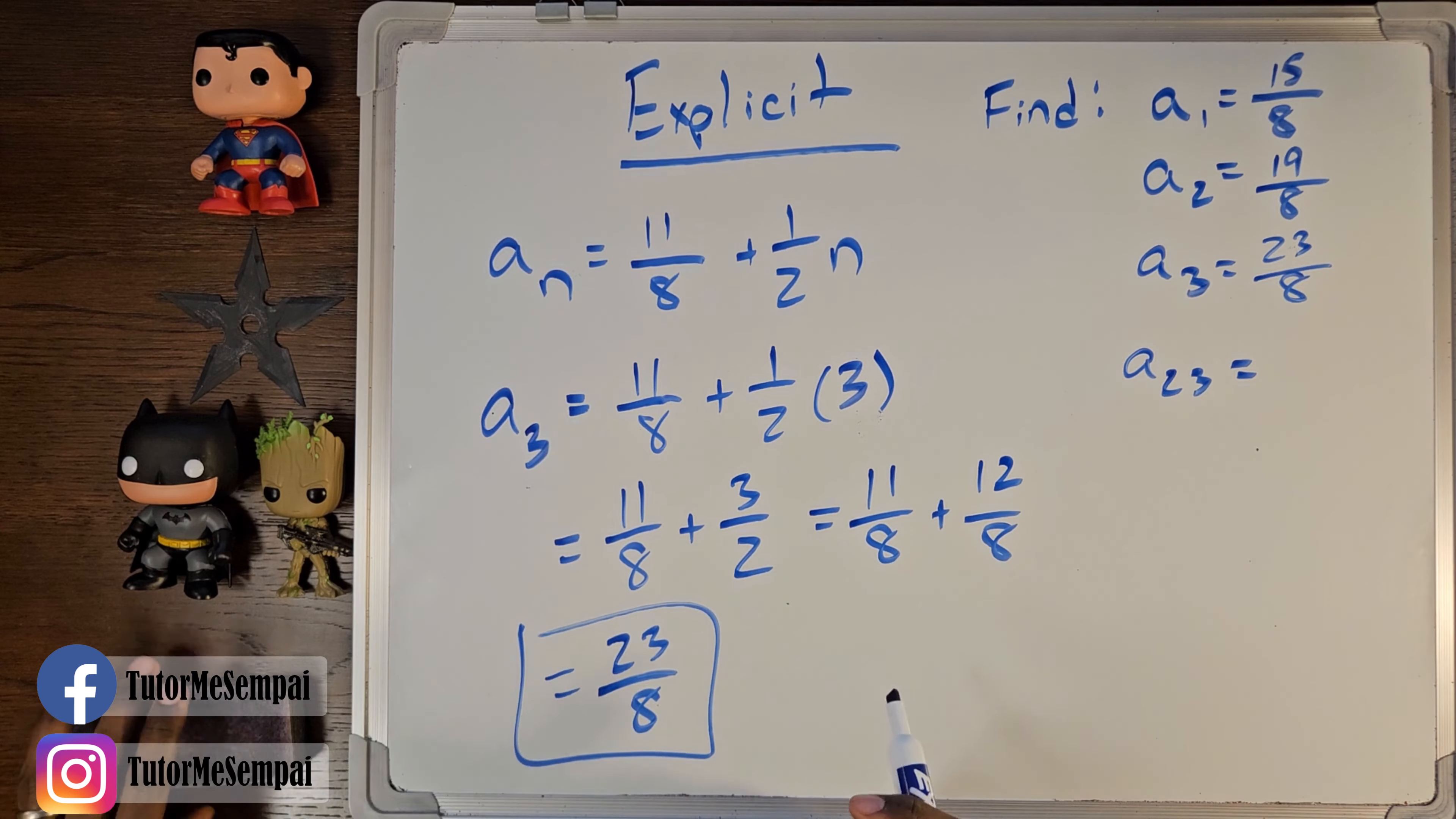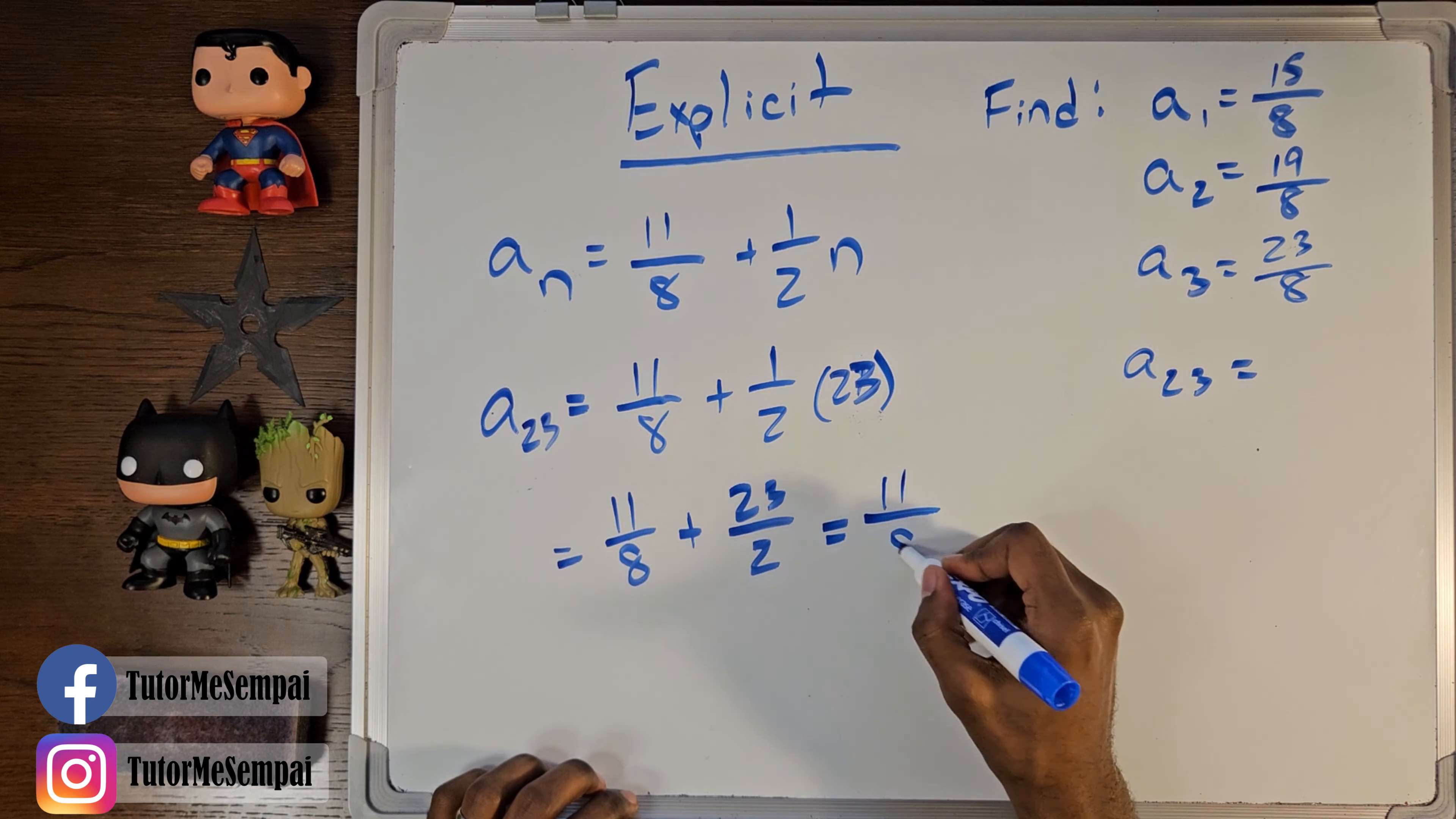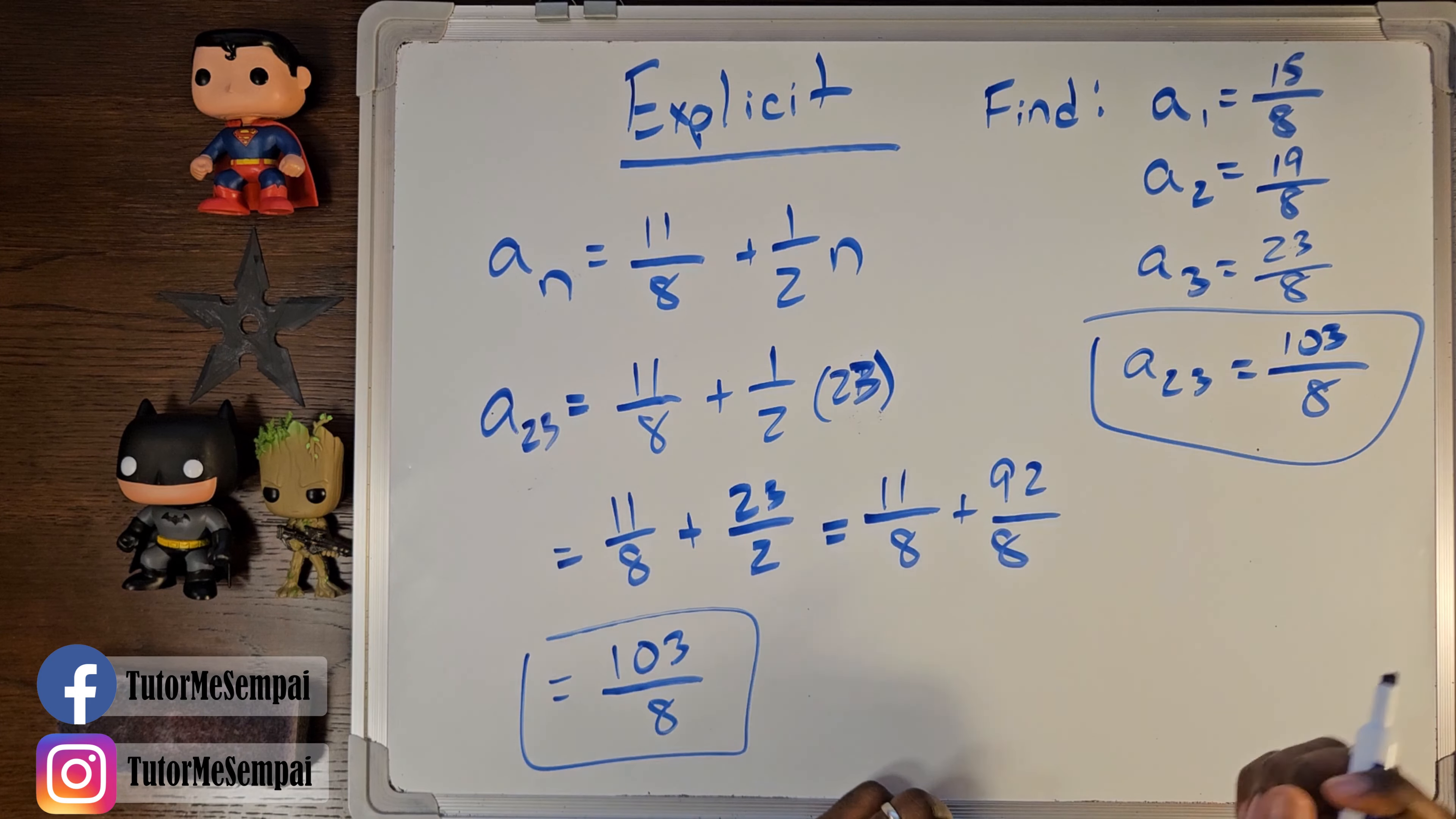We're going to do the same exact thing that we just did. So, we're going to remove all of our 3's and replace them with 23. And when we do that, we have the following. So, when we simplify this, we have 11 over 8 plus 23 over 2. And this is going to be 11 over 8 plus 92 over 8. And when you combine those, you get a final answer of 103 over 8. So, our a sub 23 is 103 over 8. So, you see just how simple it is to use our explicit formula and find our first n terms, our first three terms in this case, and find some arbitrary nth term out there, our 23rd term in this case.